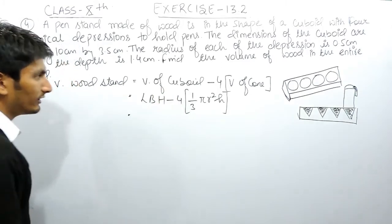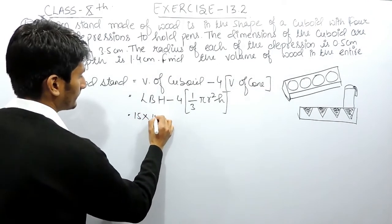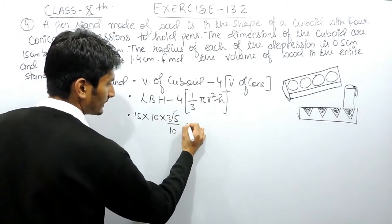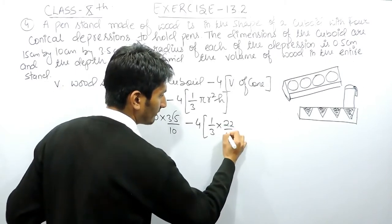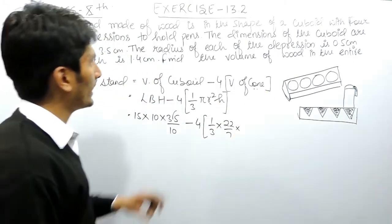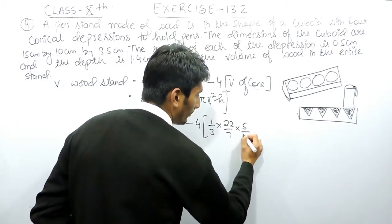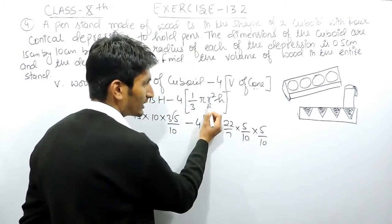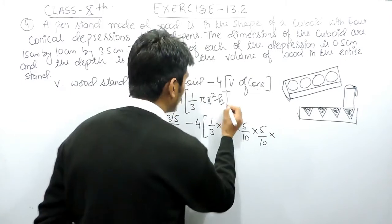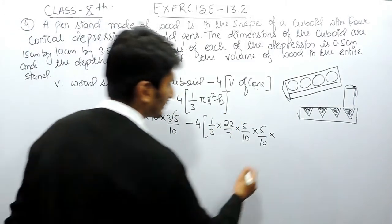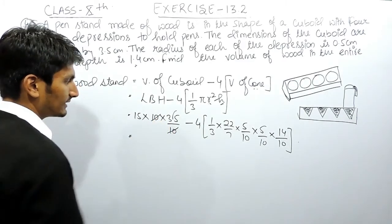The dimensions of the cuboid — length, breadth, height — are 15, 10, and 3.5, so that will be 15 × 10 × 3.5. Then minus 4 × (1/3), with pi as 22/7. The radius for each cone is 0.5 cm, which is 5/10, so r² = 0.5 × 0.5. The height of the cone is 1.4 cm, which can be written as 14/10.